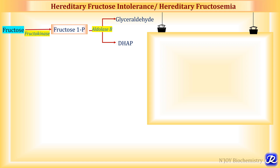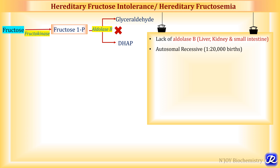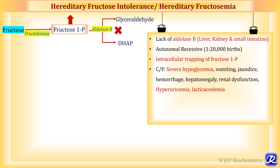The second disorder is hereditary fructose intolerance, also called hereditary fructosemia. It is due to lack of aldolase B, which is present in liver, kidney and small intestine and is responsible for conversion of fructose 1-phosphate to glyceraldehyde and dihydroxyacetone phosphate. This is an autosomal recessive condition occurring in 1 in 20,000 births. Due to lack of aldolase B there is intracellular trapping of fructose 1-phosphate, leading to increased concentration of fructose 1-phosphate, which is responsible for the various clinical features.